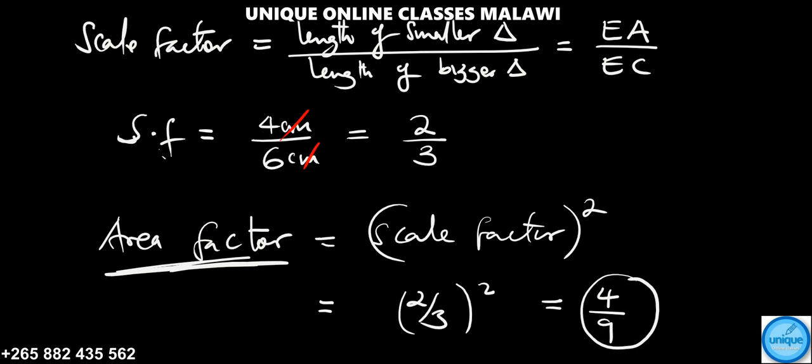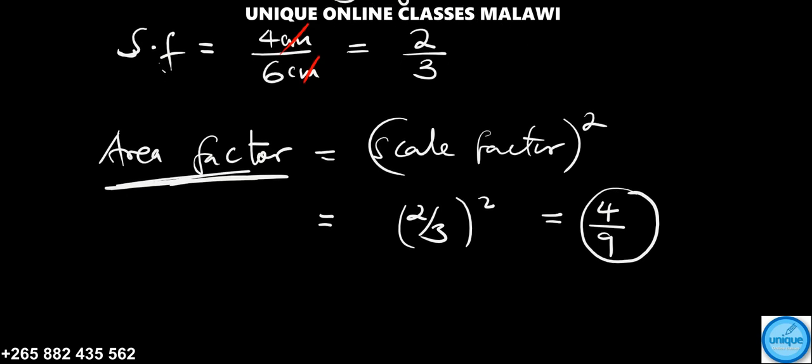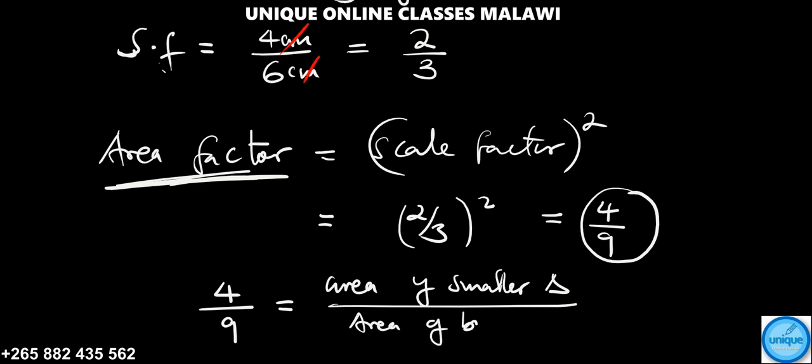So this time, area factor is equal to area of a smaller triangle divided by area of a bigger triangle.